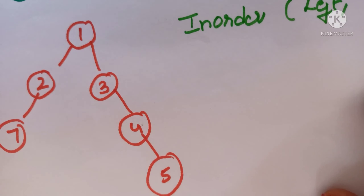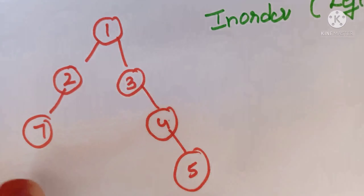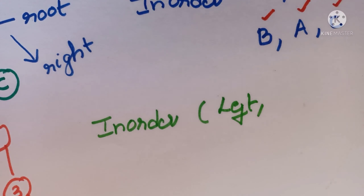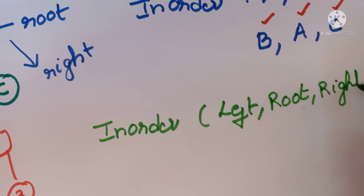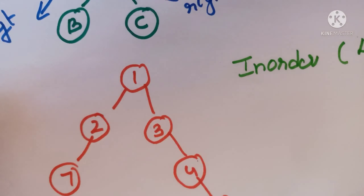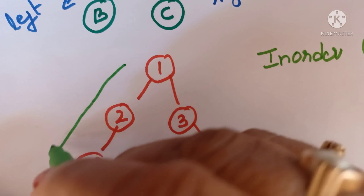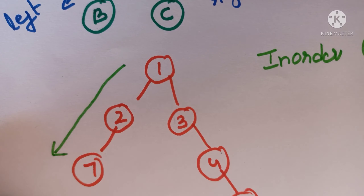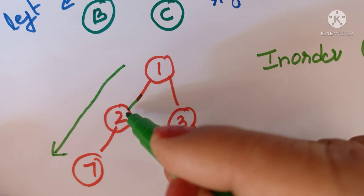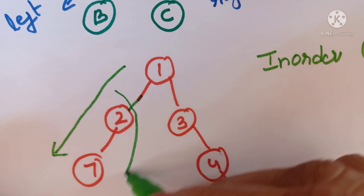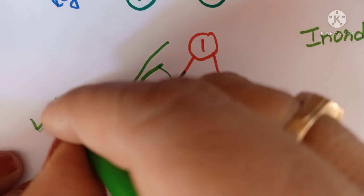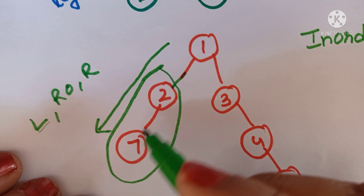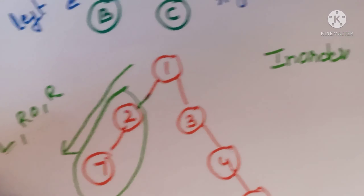Now one more example with a larger tree: root is 1, left subtree has nodes 2 and 7 (7 is left child of 2), right subtree has nodes 3, 4, and 5 (4 and 5 are right children of 3). Applying in-order — go to leftmost: 7 is the left child of 2, so write 7 first, then root of that sub-tree 2.